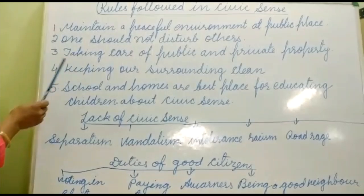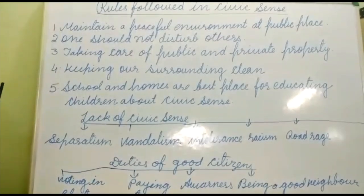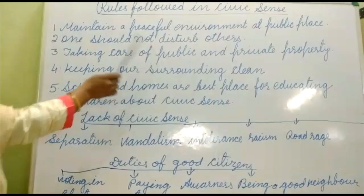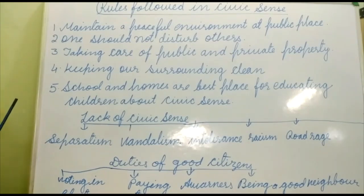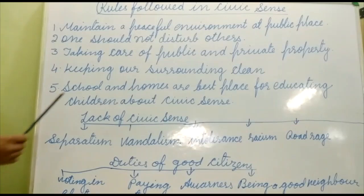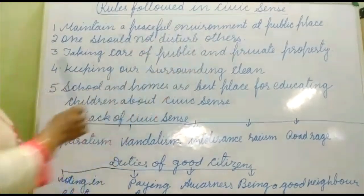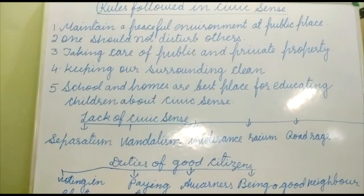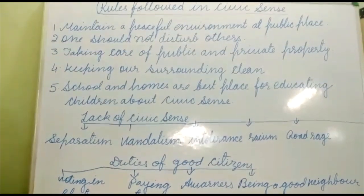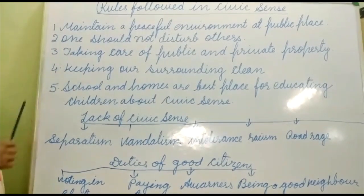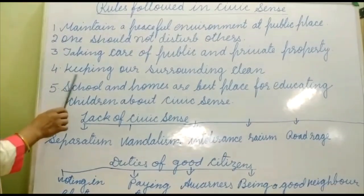Next, you should take care of public and private property. Public property is the property owned by the government — for example, government buses, trains, and public rights. Private property is the property which an individual buys with their own money and uses for personal work.